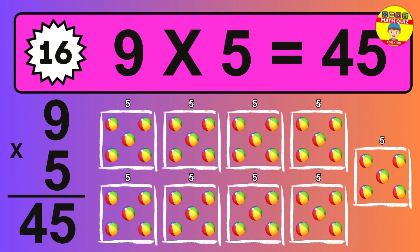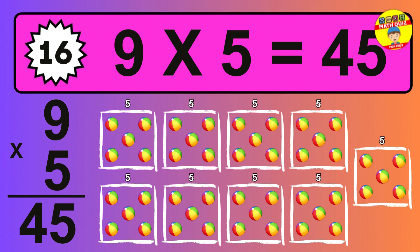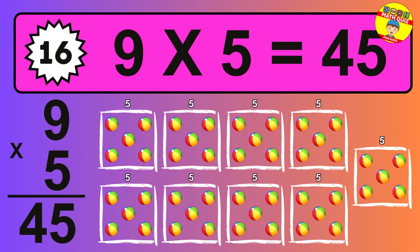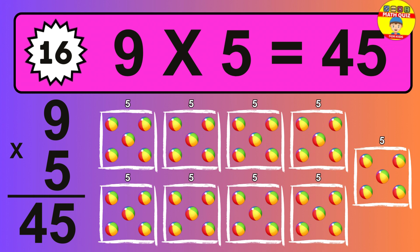Question sixteen. Nine times five equals what? So the answer is nine times five is 45. To calculate, we have nine groups with five balls each one. So how many balls do we have? 45 balls.